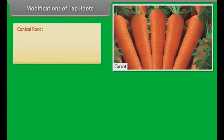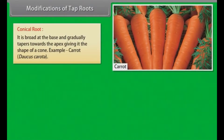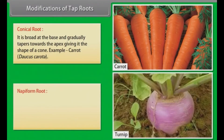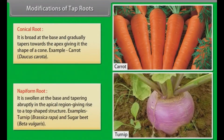Conical root: It is broad at the base and gradually tapers towards the apex, giving it the shape of a cone. Example: carrot. Napiform root: It is swollen at the base and tapering abruptly in the apical region, giving rise to a top-shaped structure. Examples: turnip (Brassica rapa) and sugar beet (Beta vulgaris).